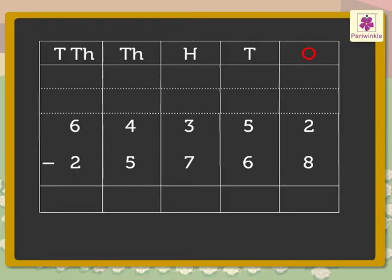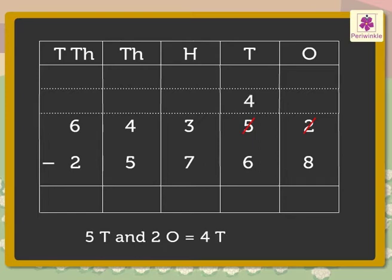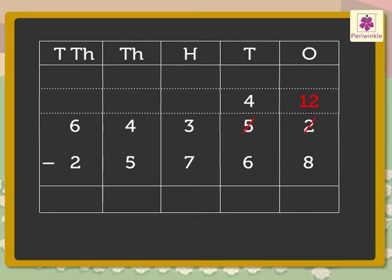Subtract the ones. That is, 2 minus 8. As the ones are not enough, we regroup the tens. Thus, 5 tens and 2 ones is equal to 4 tens and 12 ones. Therefore, 12 minus 8 is equal to 4.